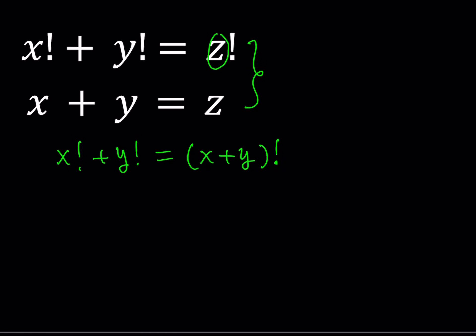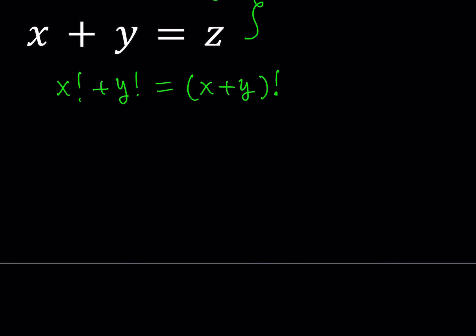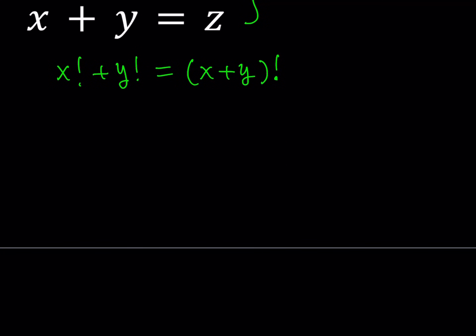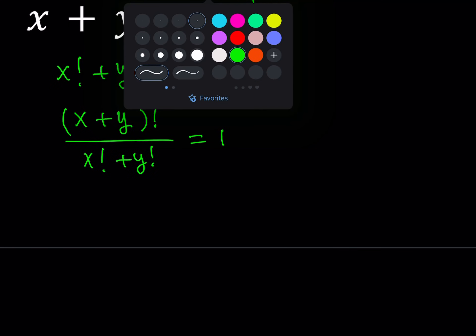So what am I going to do with this? Well, since these two things are equal, I can divide both sides by one of them and get one. Let's see if that helps us. I'd like to divide both sides by x factorial plus y factorial, and you're going to see why it makes more sense to keep the x plus y quantity factorial in the numerator. So I'm going to divide by the left-hand side and that should give me one. Now, how am I going to proceed from here?